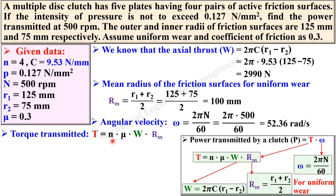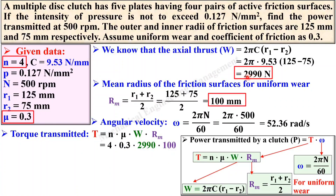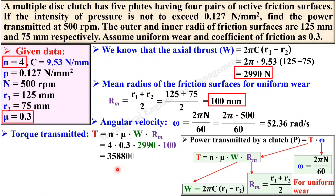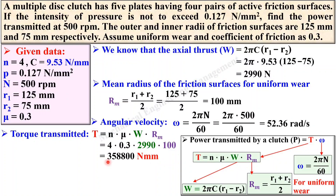Put the values: n = 4, mu = 0.3, W = 2990 N, and rm = 100 mm. Simplify it so that you will get the torque in Newton·mm, because the radius is in mm. For the power equation, the torque must be in Newton·meter, so convert it by dividing by 1000.